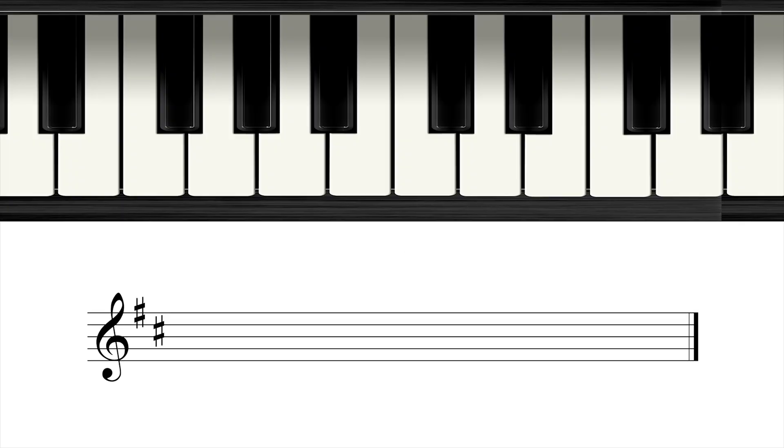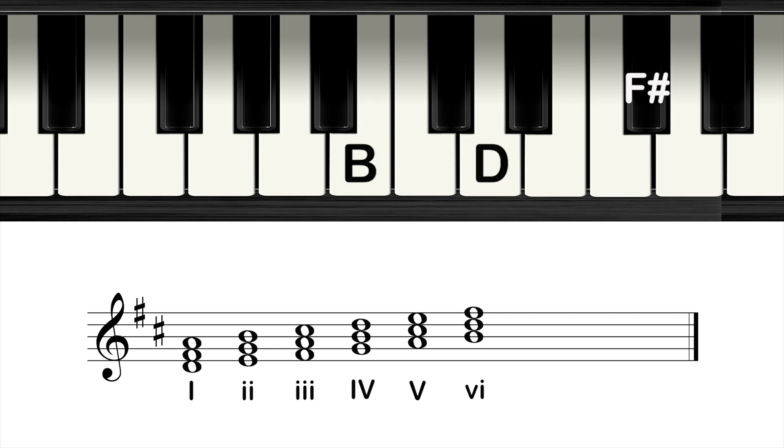In a major scale, the one chord is major, the two chord is minor, the three chord is minor, the four chord is major, the five chord is major, the sixth chord is minor, and the seventh chord is diminished. Roman numerals are abstract chord progressions that can easily be transposed to any key.